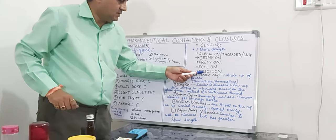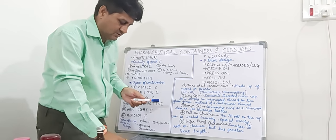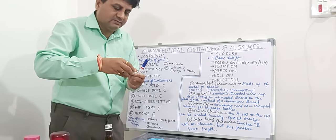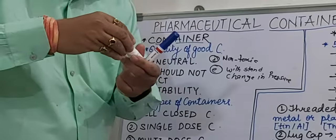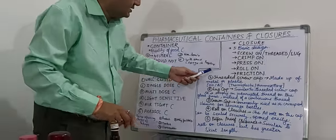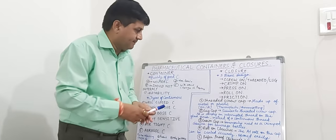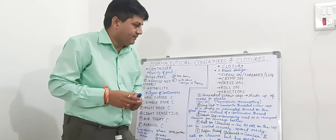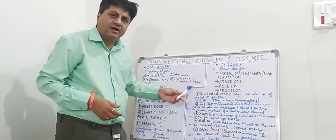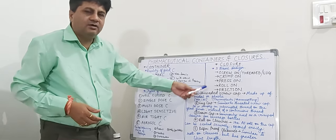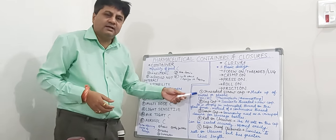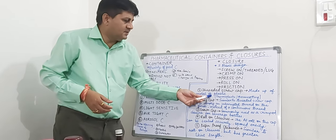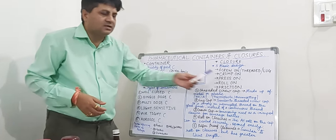The last basic design is the friction cap. These are the five basic designs of closures. Under these designs, the threaded screw cap is made up of either metal or plastic. When talking about metal, it may be tin or aluminum. When talking about plastic, it may be thermoplastic or thermosetting material. The lug cap is similar to the threaded screw cap.